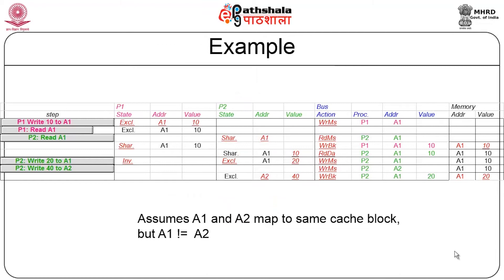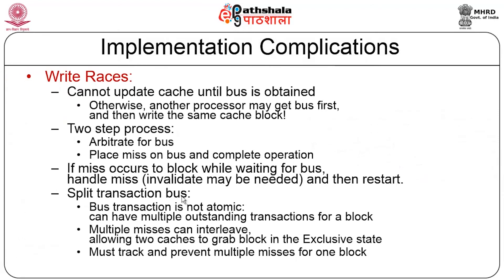There is an example to show what happens with various reads and writes in the snoop-based protocol. The assumption is that addresses A1 and A2 map to the same cache block but A1 is not equal to A2. For a read request, data is taken from memory and satisfied. For a write request, a write-invalidate must be sent to all cache controllers holding the block — they are first invalidated and only then is the data modified.